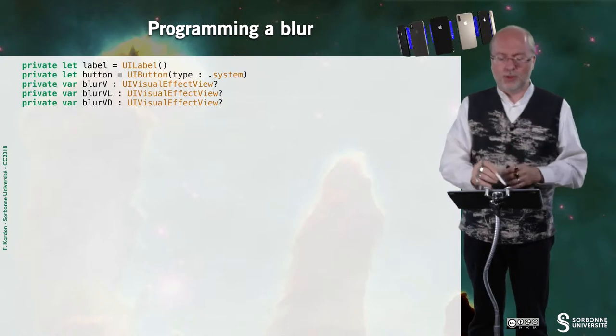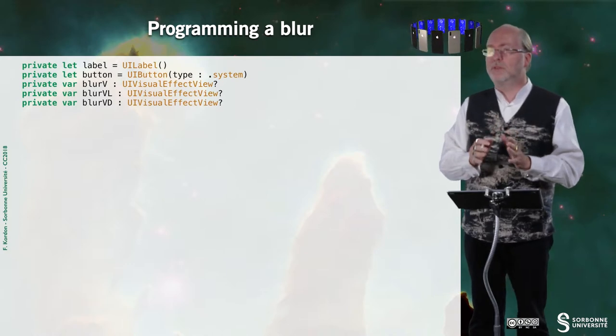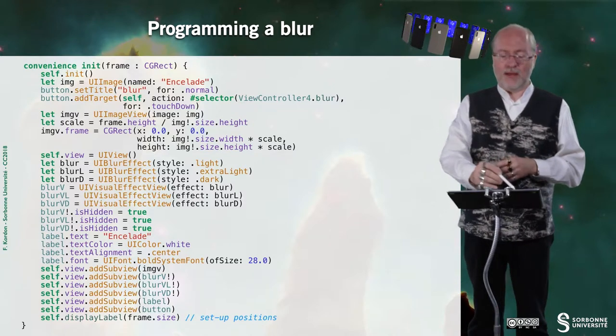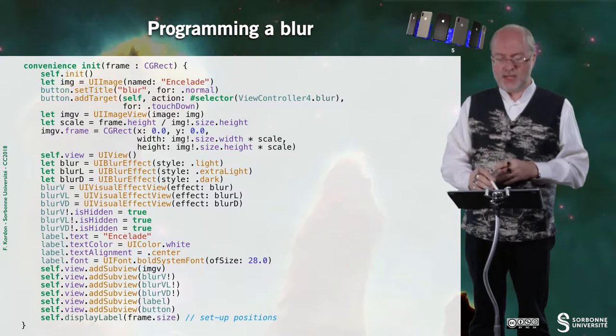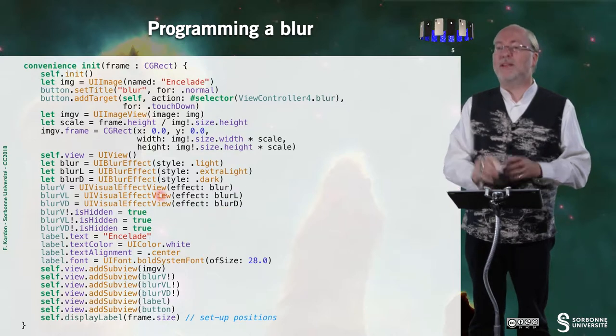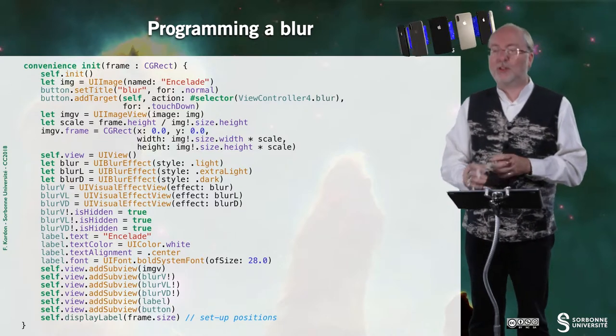Let's have a look at how you program a blur effect. I don't provide all the code here since you are already able to draw views — I just provide the part of code that is necessary. So here there is a UI label, a UI button, and the important things are these three variables that are UIVisualEffectViews. In the init function, I create these objects — I instantiate UIVisualEffectViews with three different parameters: the extra light blur, the light blur, and the dark blur.